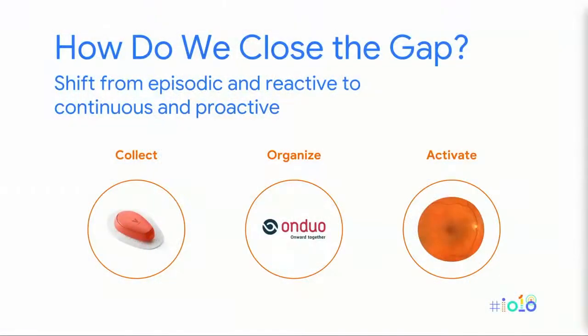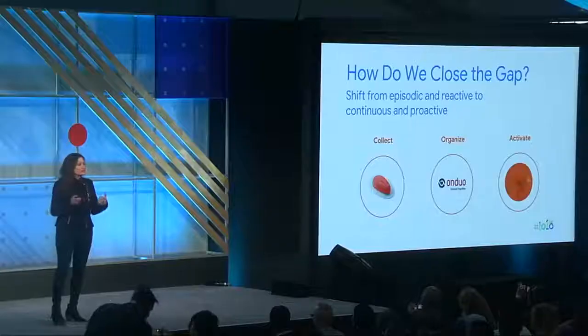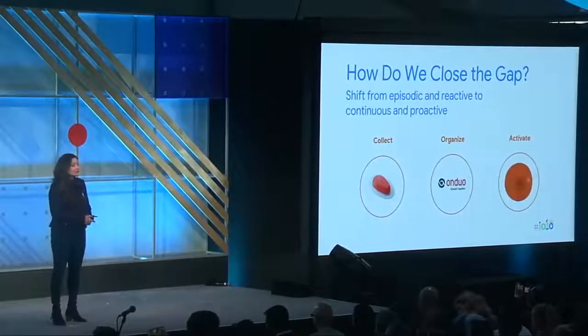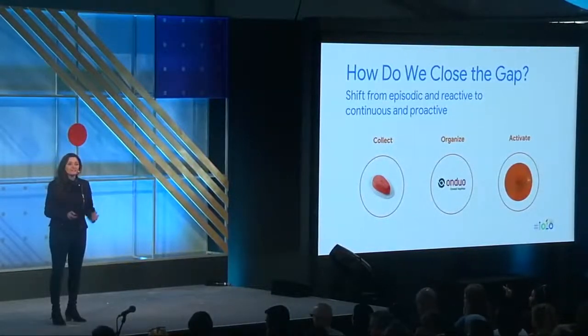At Verily, we're focusing on three key missions. We're thinking about how to shift from episodic and reactive care to much more proactive care. In order to use the power of AI, we have to do three things: collect the right data — today I'll be talking about continuous glucose monitoring — organize this data into a format we can unlock and activate to truly help patients, and apply this whether we're working in diabetes or with our surgical robots.